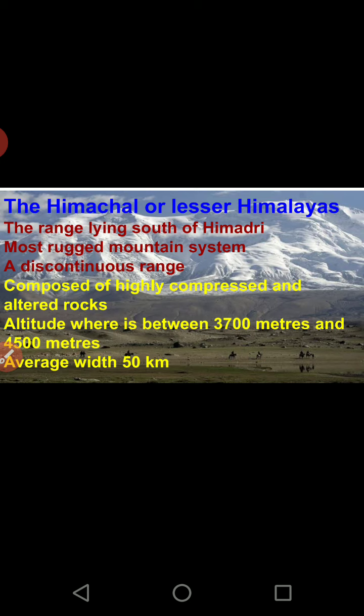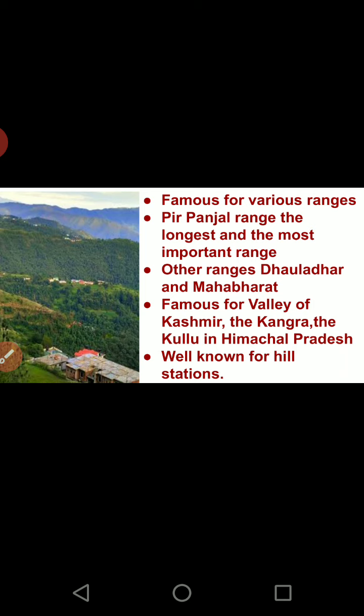The average altitude of Himachal ranges from 3700 meters to 4500 meters — compared to Himadri's 6000 meters. The width is about 50 kilometers. This range is famous for various sub-ranges, of which the Pir Panjal range is the longest and most important, along with the Dhaula Dhar range and the Mahabharat range.